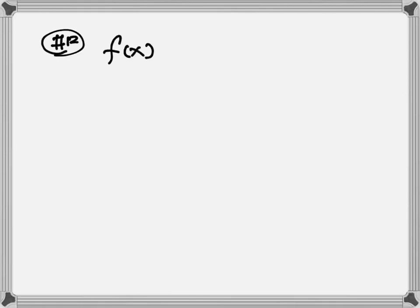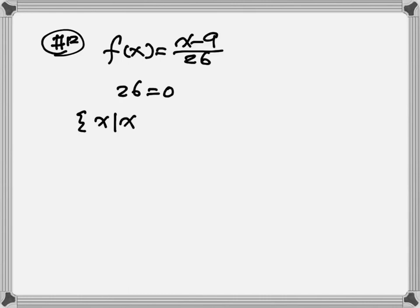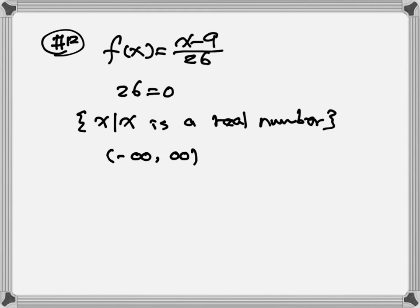Last one, number 12. Here we have f of x equal to x minus 9 over 26. We set the denominator equal to zero, so 26 equals zero. But we're solving for x and there's no x, so we just write the solution: x is a real number. The interval notation will be negative infinity to positive infinity. That's the answer.